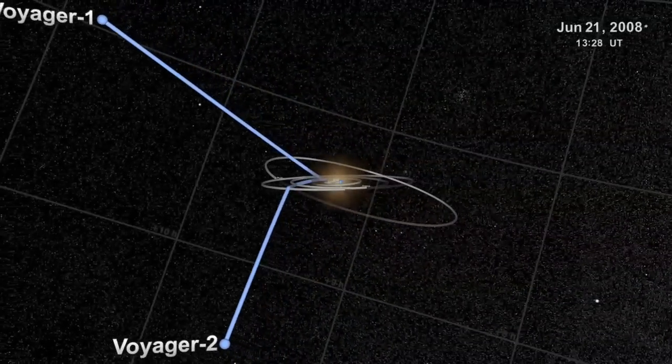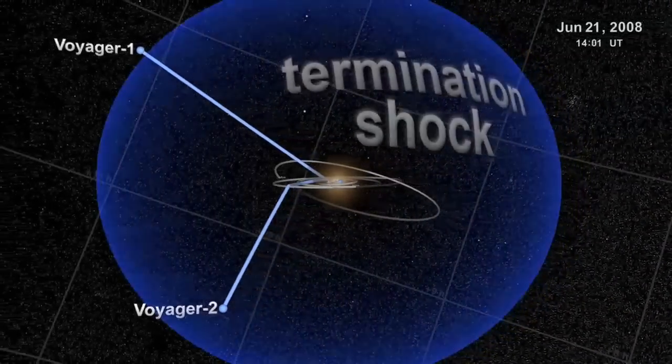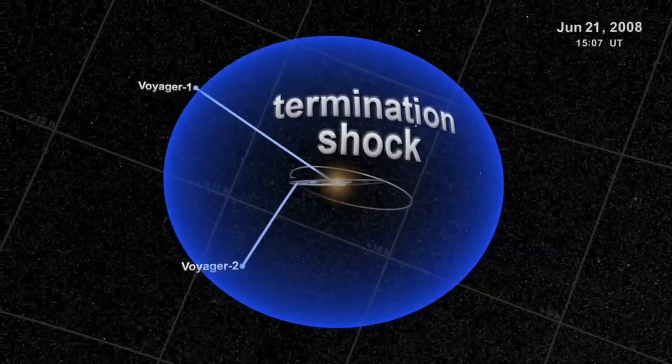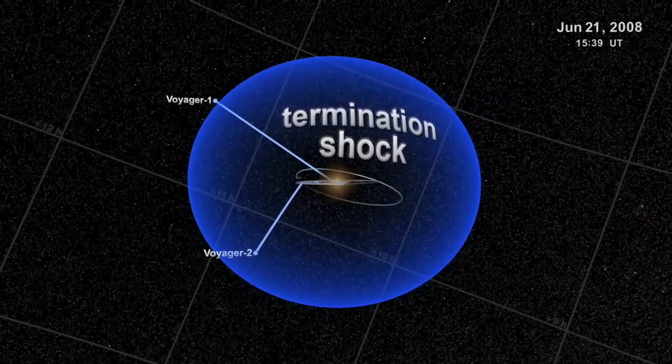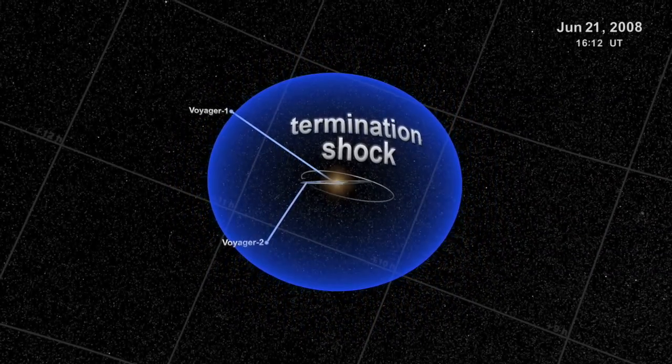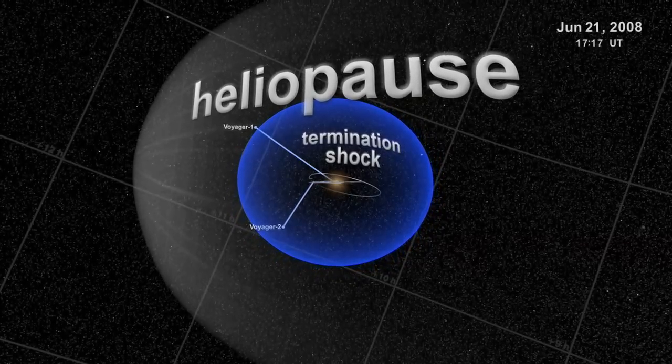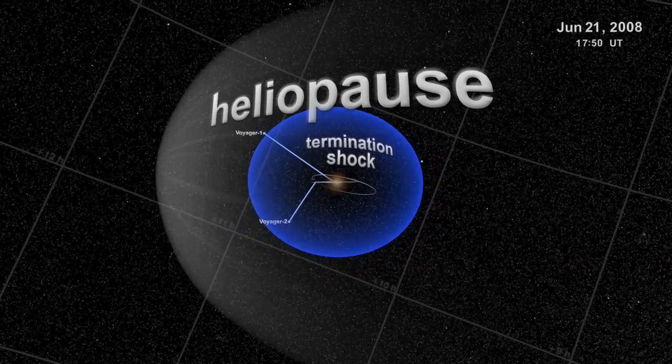They are also the first human objects to encounter the sun's termination shock, the area where the solar wind slows down enough to be affected by the flow of interstellar particles. In a couple of decades, one of the Voyager crafts should pass the heliopause, the zone where the sun's influence meets the interstellar medium.